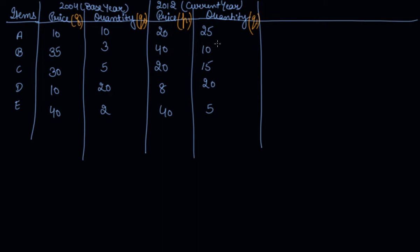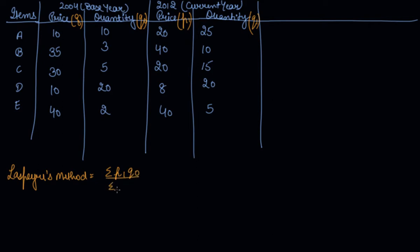You cannot use the simple aggregate method or the simple price relative method here because you are given quantities as well. Whenever you are given quantities, you will use either the Laspeyres method, Paasche's method, or Fisher's method. In this question we will solve all three. The Laspeyres method formula is: sigma P1Q0 divided by sigma P0Q0 into 100.